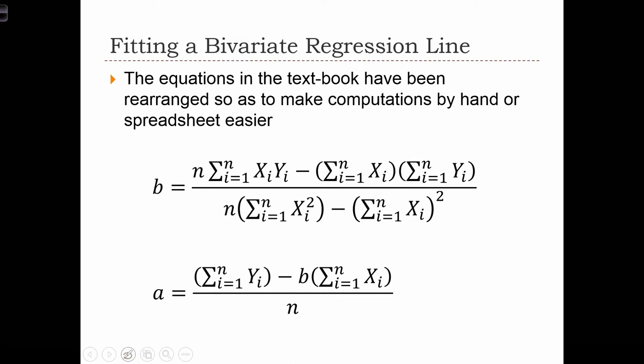The equations on the previous page are useful for trying to understand how we interpret A and B, but they're not necessarily useful when it comes to calculating A and B by hand. So here we've got two new equations for B and A. These two equations are actually equal to the ones on the previous slide, but these will be much easier to implement when we're trying to compute A and B from a sample of data.